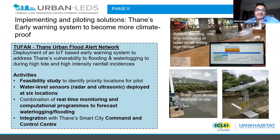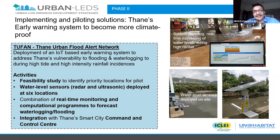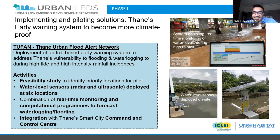The last step is implementing and piloting solutions. As an example, Thane has implemented sensors as part of an early warning system across the city on a pilot scale. When there is high tide and high intensity rainfall, the city receives early warnings approximately 20 to 25 minutes in advance for incidences of water logging and flooding. Such solutions need to be monitored and can be scaled up appropriately.